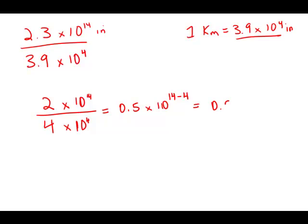So that will be 0.5 times 10 to the 10th. And I'm going to move the decimal place over one place and drop the power of 10 by 1, giving us 5 times 10 to the 9th. This is very close to answer choice B. Incidentally, this distance is slightly further than the dwarf planet Ceres and not quite as far as Jupiter, but closer to Jupiter — so that might be the hypothetical planet they have in mind.